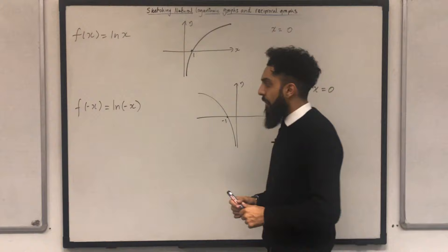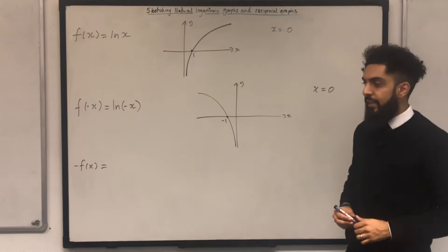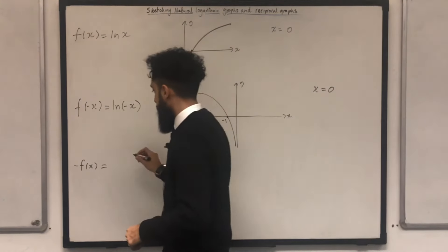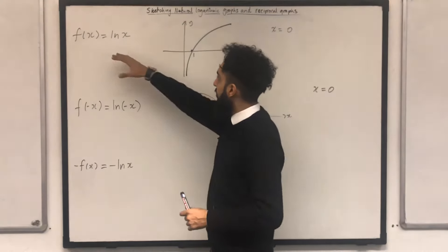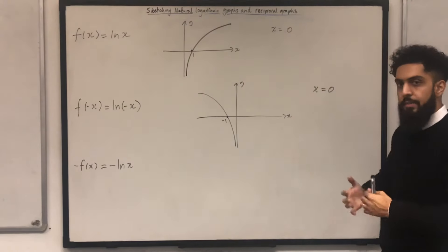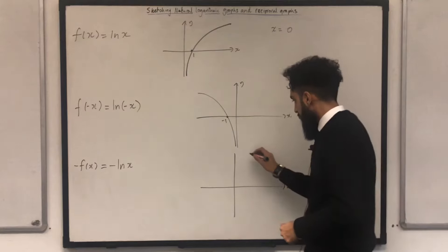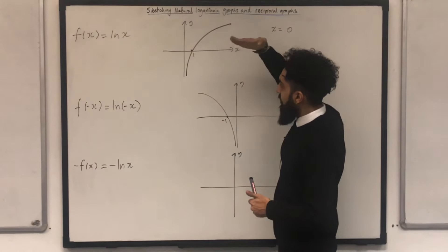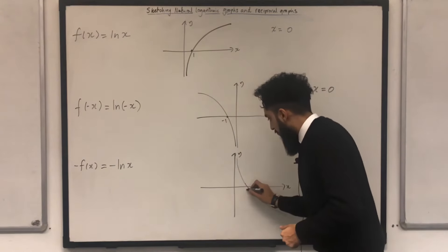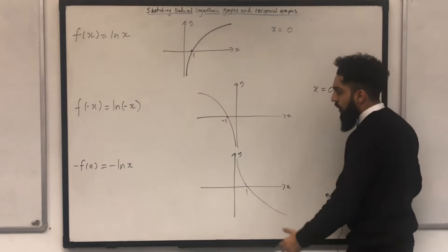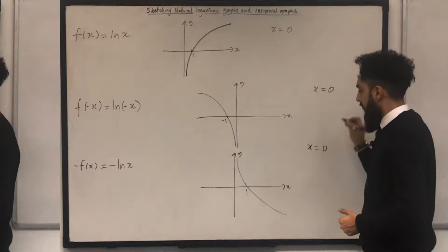Now I'm going to look at the function -f(x). Since f(x) = ln(x), -f(x) is just -ln(x). The way I sketch -f(x) is to take the graph of f(x) and reflect it in the x-axis. The x-intercept will still be 1, and the equation of the vertical asymptote — the y-axis — will still be x = 0.